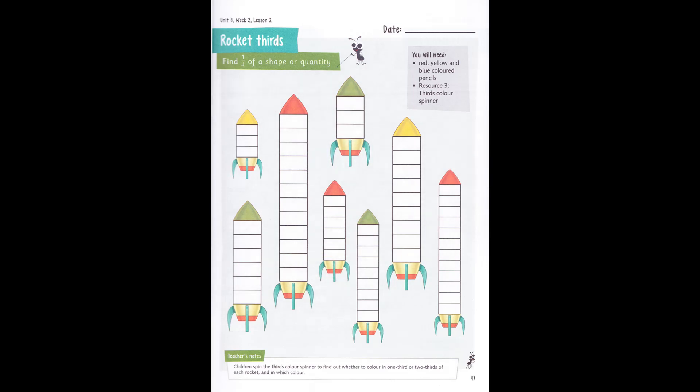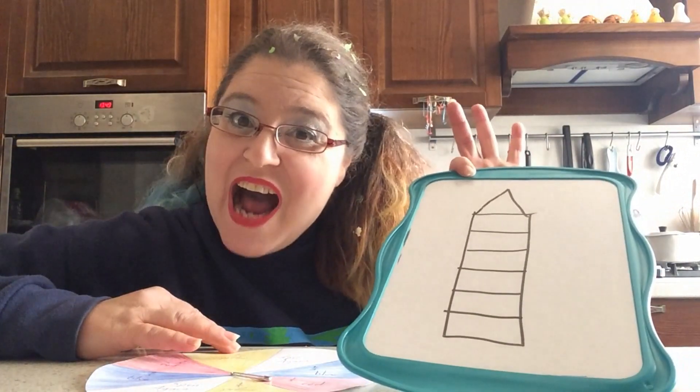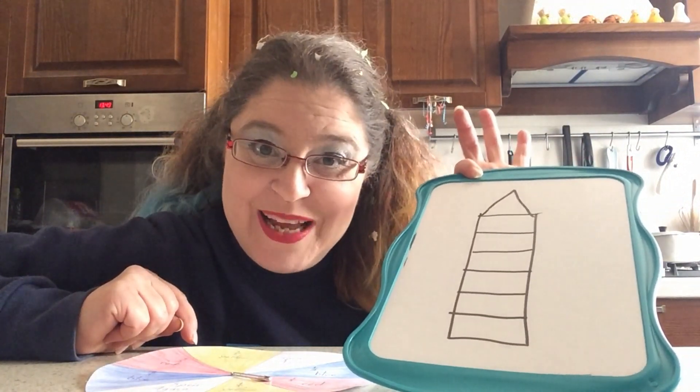If you want to do this page simply without the game, find the rockets that have the same number of pieces. Color one-third of one rocket in one color, and color two-thirds of the rocket with the same number of pieces in another color. Do that for all of the rockets.